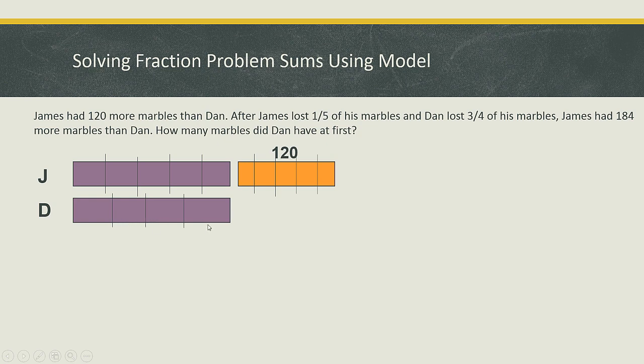From here, you shade those that are being lost. In this case, James lost one-fifth. So out of the five units, this one unit is being lost. And of course, this one unit out of this 120 is also being lost. That's for James. And for Dan, since he lost three-quarters, these three units are being lost.